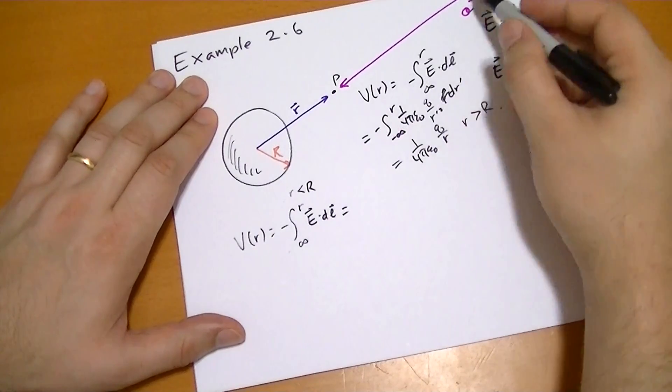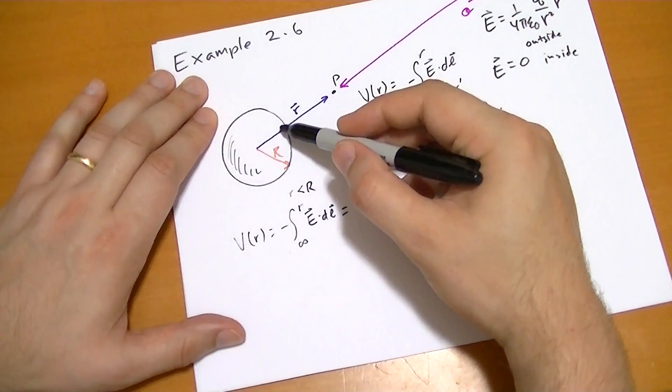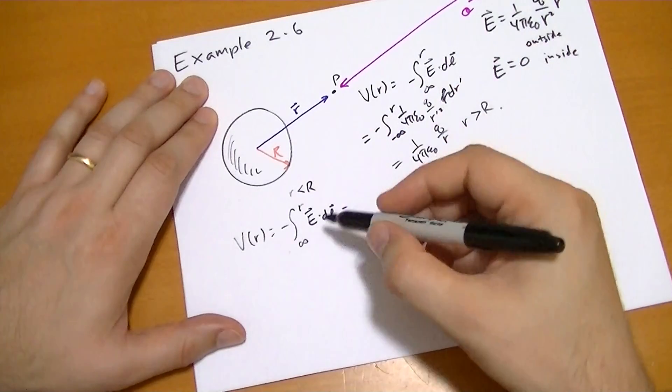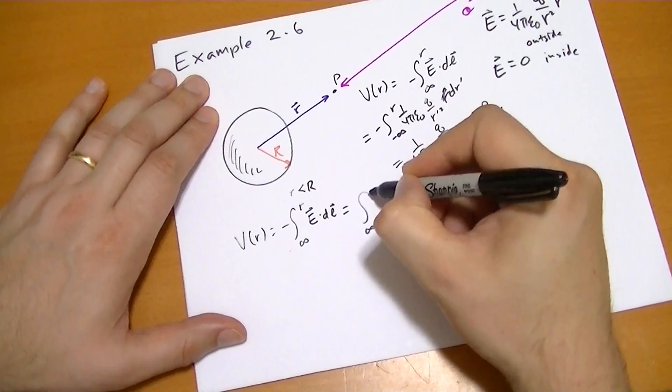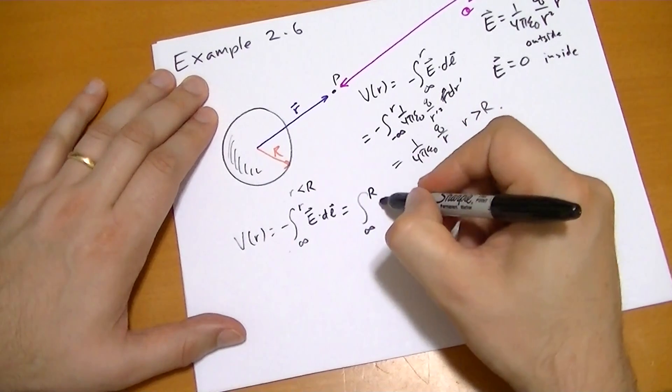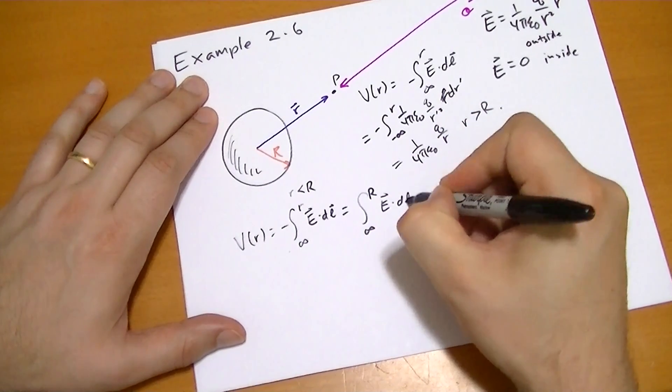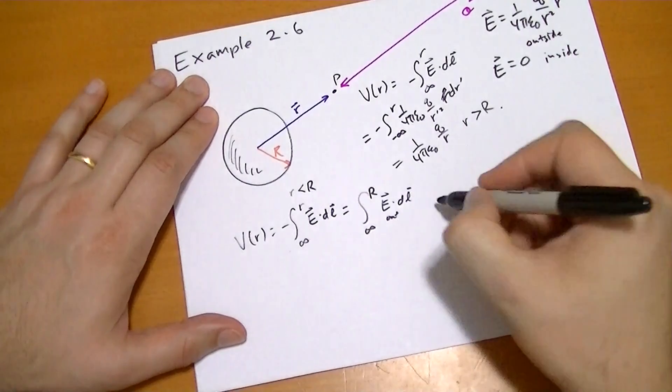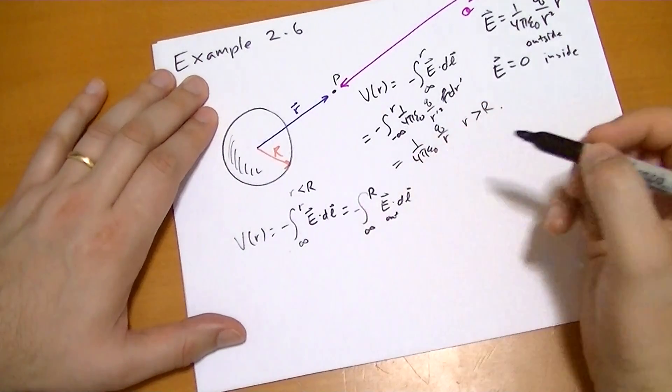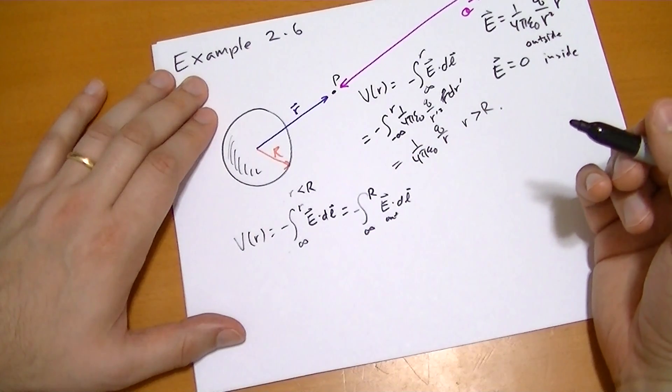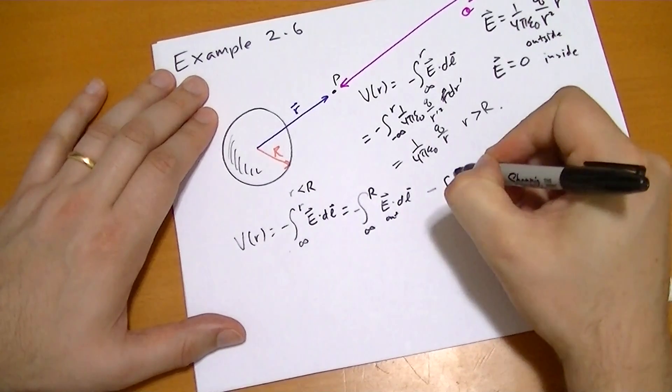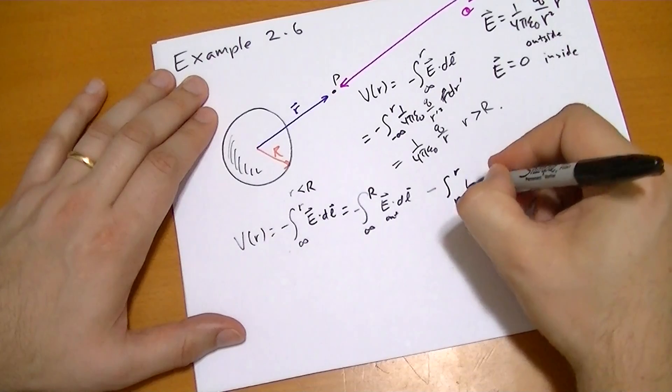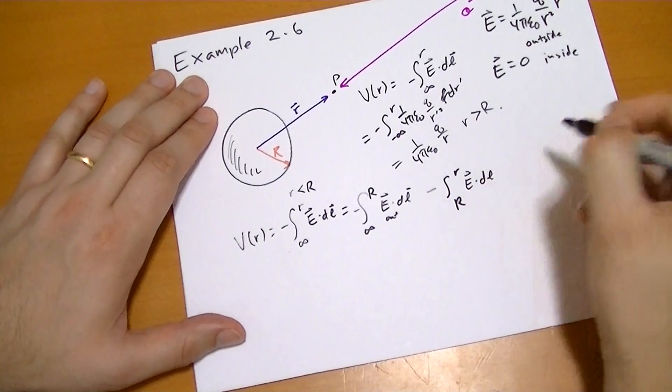One for coming up to the sphere, and the other from inside the sphere, where the electric field is zero. So that is from infinity to the point R of e vector dot dl vector outside. And the other is going from R to the point r we're looking at on the inside of the sphere, e vector dot dl vector.